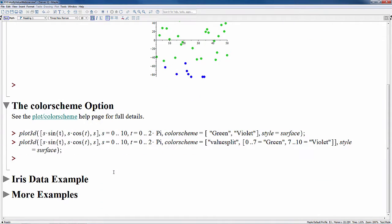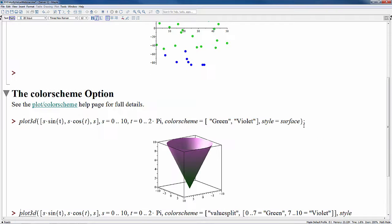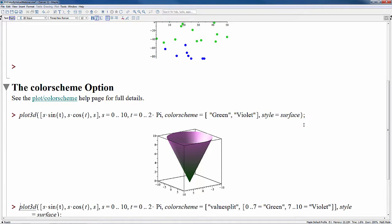The way we'll do this is to use the color scheme option. When you use the color scheme option with a list of colors, green and violet in this case, the default scheme is what we call the Z gradient scheme, which applies a color gradient over the entire surface. The colors change gradually from one to the next color as given in the list. So here it goes from green to violet in a gradual manner.